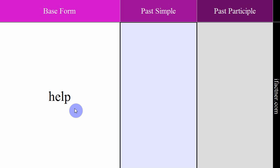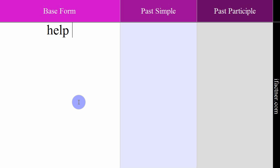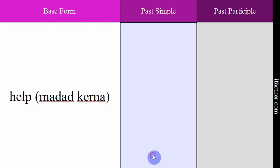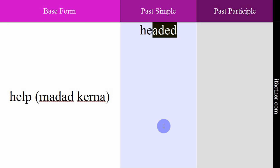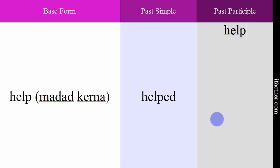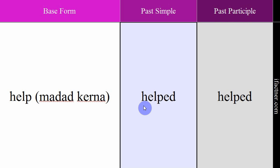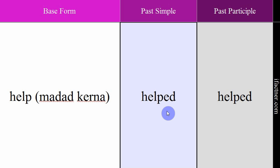The next verb is 'help'. While help is often used as a noun (madad), as a verb it means madad karna — to help. Example: 'Please help me.' — Meherbani karke meri madad karein. Past simple and past participle form: helped. Past simple: 'He helped the poor.' — Usne gariibon ki madad ki. Past participle: 'I have helped some people.' — Maine kuch logon ki madad ki hai. Verb: help. Meaning: madad karna. Past simple: helped. Past participle: helped.